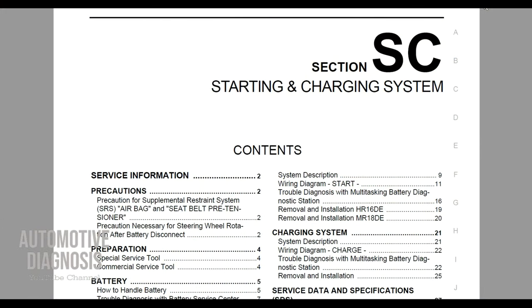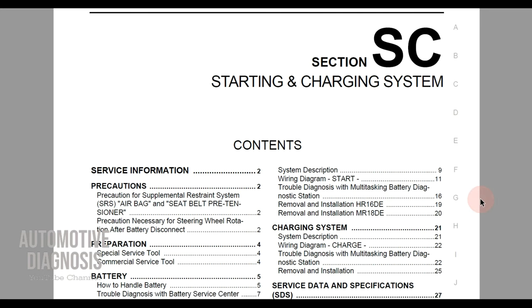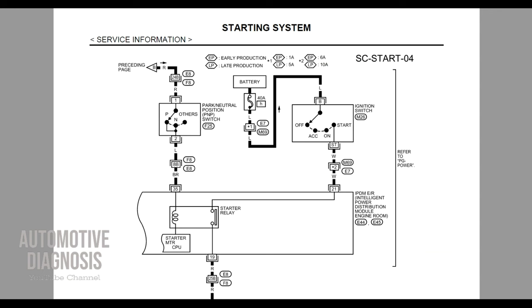Let's start by having a look at the wiring diagram for the starting system. Many manufacturers provide the wiring diagram separate from the workshop manual, so you have some files for wiring diagram and some others for the workshop manual. But for Nissan, if you look at this workshop manual, the wiring diagram is part of the workshop manual. So the wiring diagram and workshop manual are together.